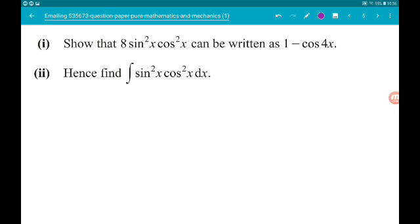sine squared x, cos squared there, cos squared x is 1 minus cos 4x. Okay.